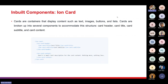Moving on to IonCard: cards are containers that let you display text or images in a card format on your UI. The ion-card template includes an ion-card-header containing a title and subtitle, and then card content. If you want an image in the card, there is a tag for that too, which we will see in the demo.